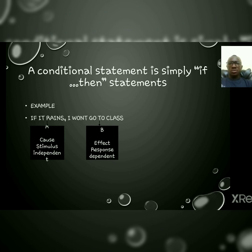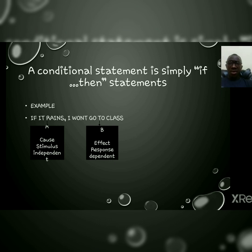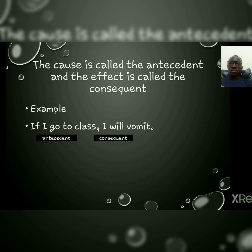Now, 'if it rains' is the cause — people call it the stimulus, or the independent variable. And 'I won't go to class' is the effect — people call it the response or the dependent variable. So you can see that 'if it rains' brings about 'I won't go to class.' Every conditional statement has a cause and an effect side, or a stimulus and response side, or an independent and dependent side.